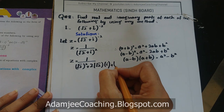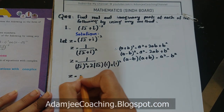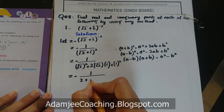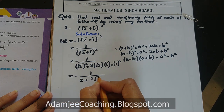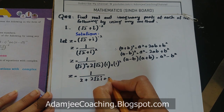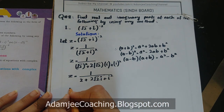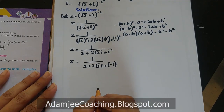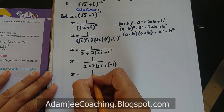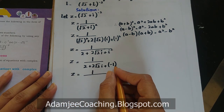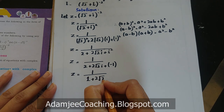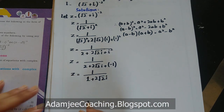z = 1 upon (√2 + 2√2·iota + iota²). اب iota² کی جگہ minus 1 رکھ دی، z = 1 upon (2 + 2√2·iota - 1). 2 minus 1 = 1 آئے گا، تو denominator بن جاتا ہے 1 + 2√2·iota۔